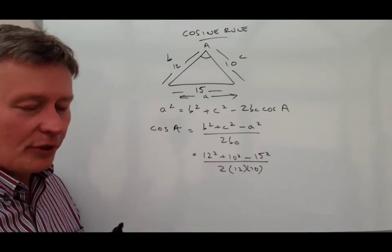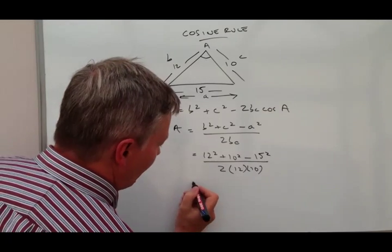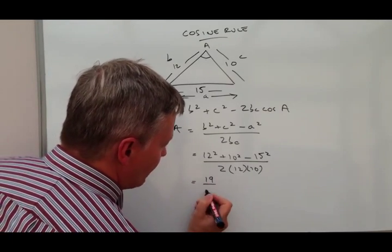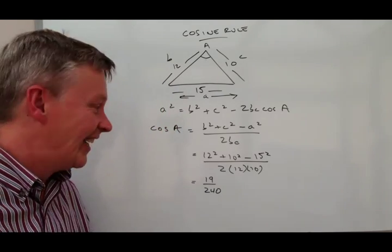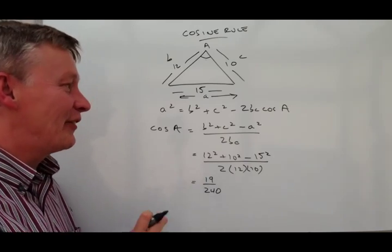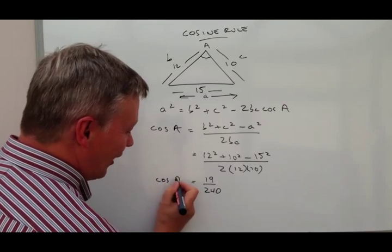But do be very careful about how you put it in because you're looking for a reasonable answer, and the answer you're going to get out of this is 19 over 240. It's probably not that reasonable really, it doesn't look anything like an angle, and that's because that is the value of cosine A.